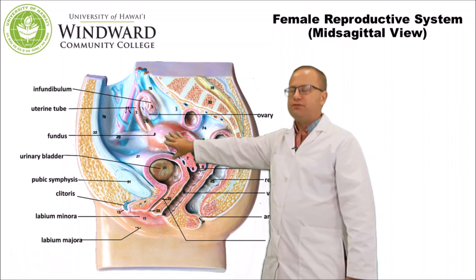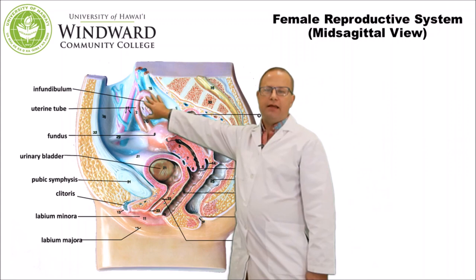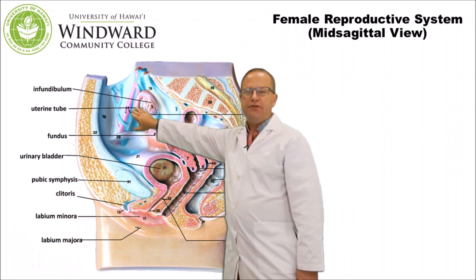Job number three is ovulation — once a month, under the direction of LH, one oocyte ovulates from the ovary, moves up the infundibulum into the uterine or fallopian tube, and eventually into the uterus.